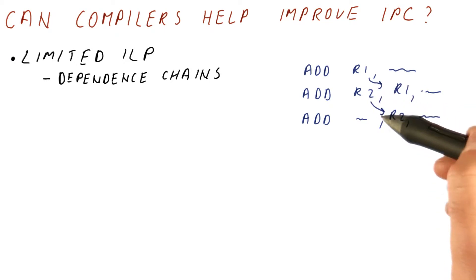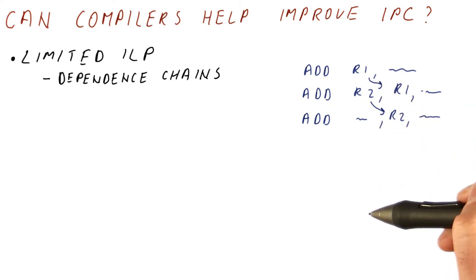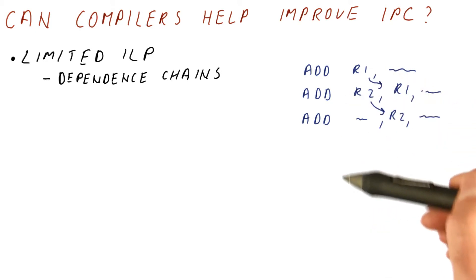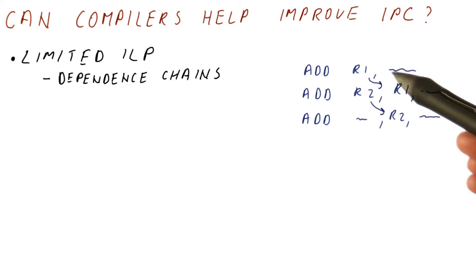So really, if we have a long chain like this, then there would be very limited ILP in this program, because we can really execute only one instruction at a time. So the compiler, as we will see, might help us actually avoid these kinds of dependence chains.